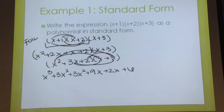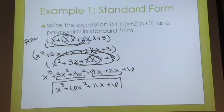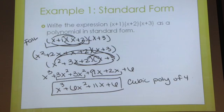From here, you should notice that it's pretty much pre-set up to simplify very easily. The x squared terms are right next to each other and the x terms are right next to each other. You just simply need to simplify this polynomial and you'll get x cubed plus 6x squared plus 11x plus 6. And that is our final solution. If you want to make sure to verify that you can properly classify, this would be a cubic polynomial of 4 terms.